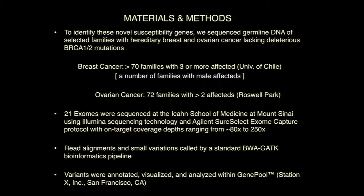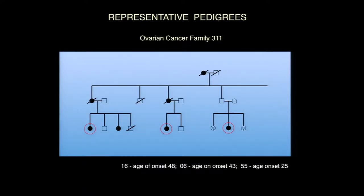For materials and methods, we did this in collaboration with two groups: Dr. Lillian Jara from the University of Chile, who gave us 70 families with three or more affected individuals, including families with male affecteds, and Kunle Odunse from Roswell Park, who gave us 72 families with more than 72 affecteds. As a preliminary test, we started by sequencing 21 exomes at this level of coverage. Here is a representative ovarian cancer family — Family 311 — with three affected women with ages of onset 48, 43, and 25.